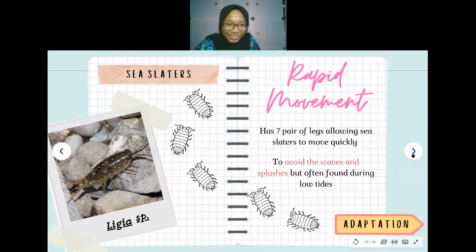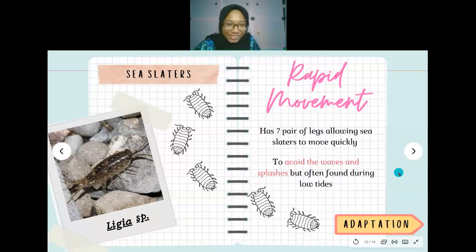The third animal is the Sea Slater, or Ligia. They are able to live in Rocky Shore ecosystems due to their rapid movement — they have seven pairs of legs allowing very quick movement. This enables them to avoid waves and splashes, and they are most active during low tide, which also helps them avoid predators.